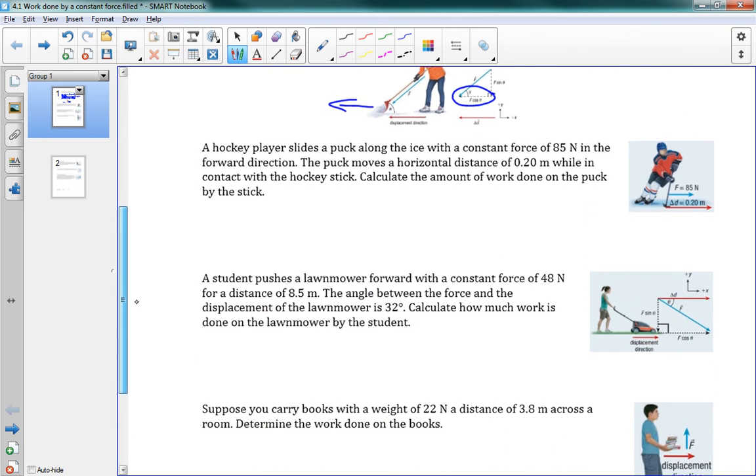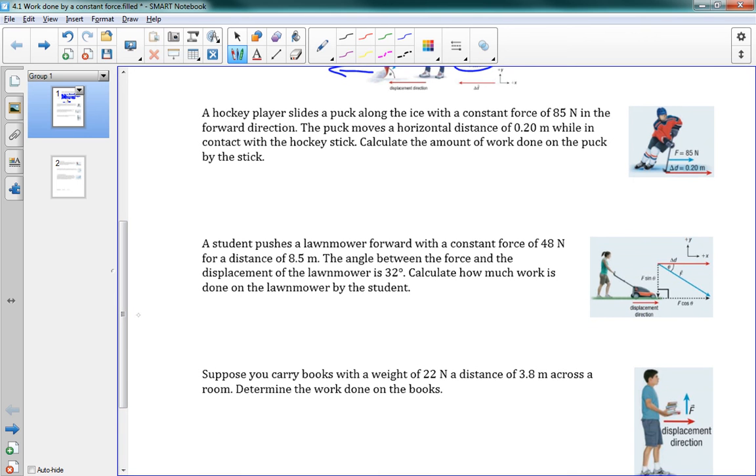So we'll do a couple problems that illustrate that. This first problem is a hockey player, and the hockey player is sliding a puck along, applying a force of 85 newtons over a displacement of 0.2 meters. We can use our equation, W equals F delta D cosine theta, and we can just plug in our numbers here. We've got 85 newtons times 0.20 meters, cosine, and now here's maybe a question: what's the angle? Cosine theta, but what's the angle of theta?